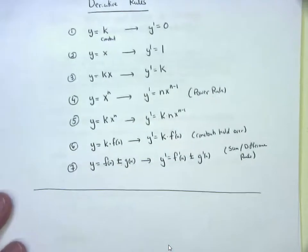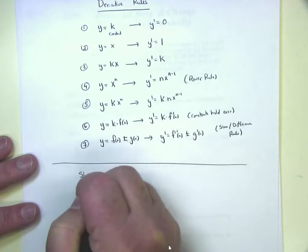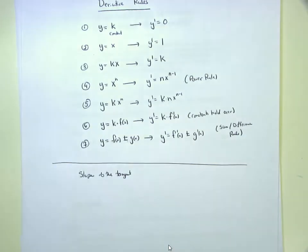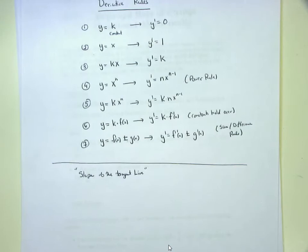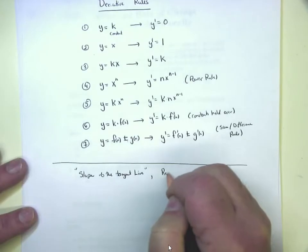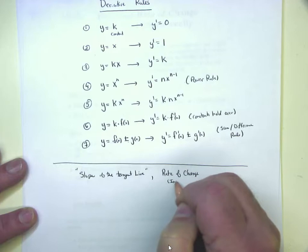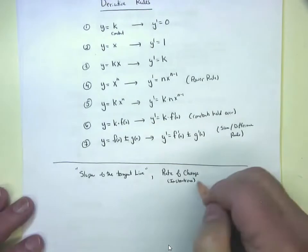We're also going to start throwing word problems at you. Know when to take a derivative: first, when directions explicitly say to. Second, when you hear the words 'slope' or 'slope of the tangent line' — because the derivative is a formula for the slope of the tangent line. Third, when you hear 'rate of change,' specifically instantaneous rate of change — that means take a derivative.